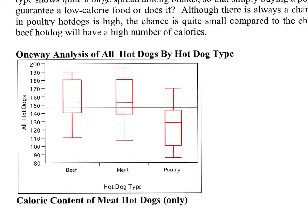In addition to the two things we can do to interpret box plots, we can also use box plots to compare several distributions. In this case, we're going to look at the different types of hot dogs to determine which one has more calories — beef hot dogs, meat hot dogs, and poultry hot dogs.